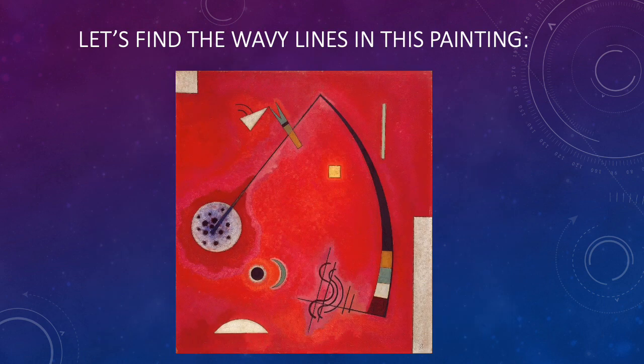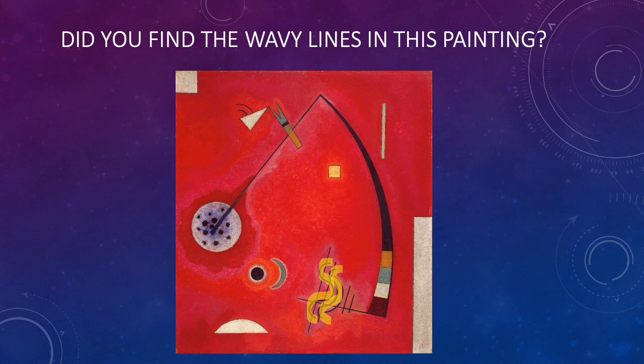Wavy lines can be horizontal, vertical, or even diagonal. Did you find the wavy lines in this painting? I highlighted them in yellow so you can see them easier. Now, would you say these wavy lines are more vertical or more diagonal? I'm not really sure — what do you think?